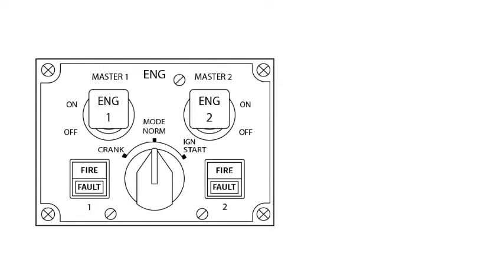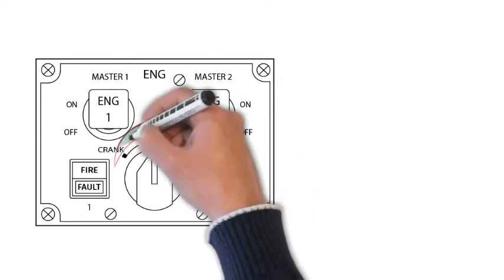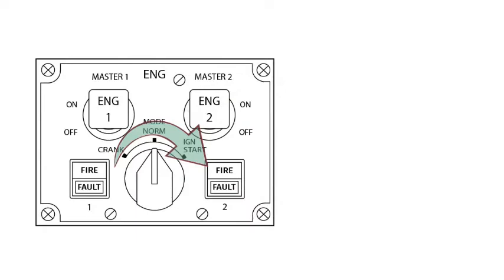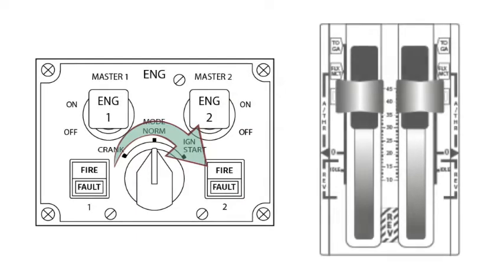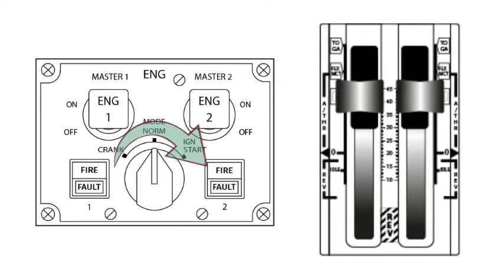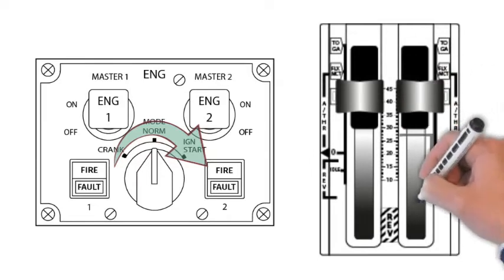The first step of the ECAM actions calls for setting the engine mode selector to the ignition position and identifying the throttle lever of the failed engine to take it to the idle position.